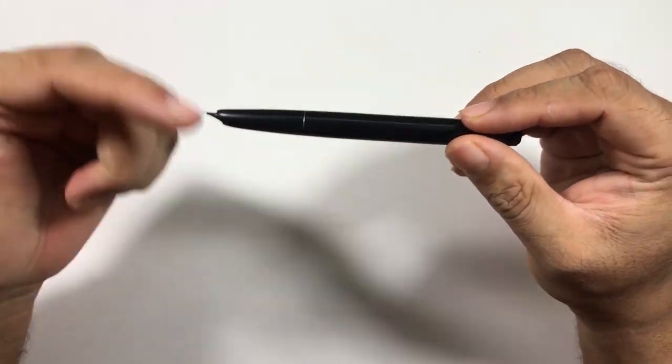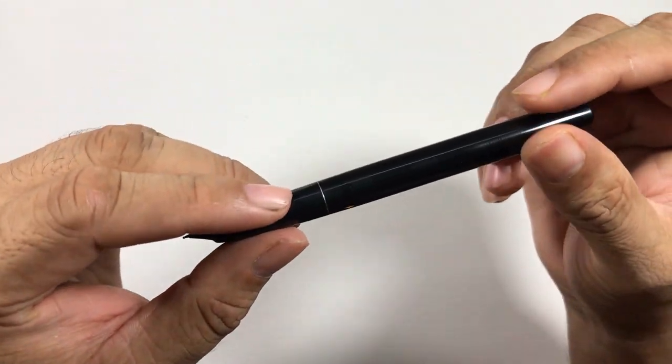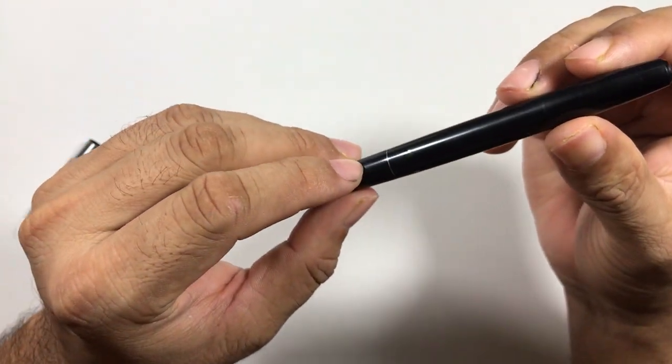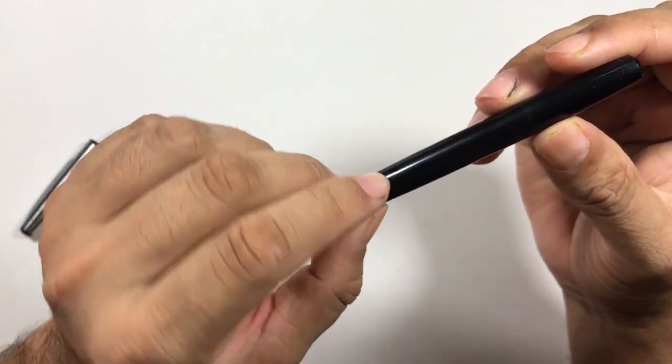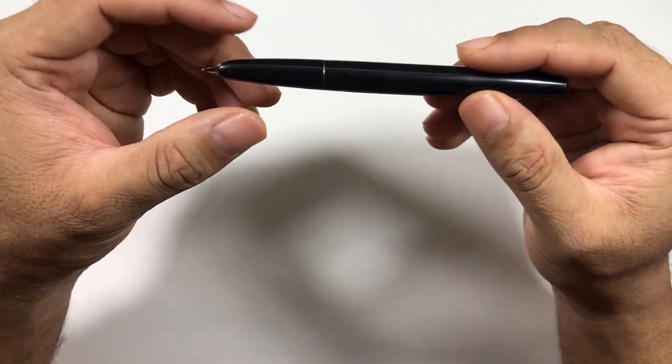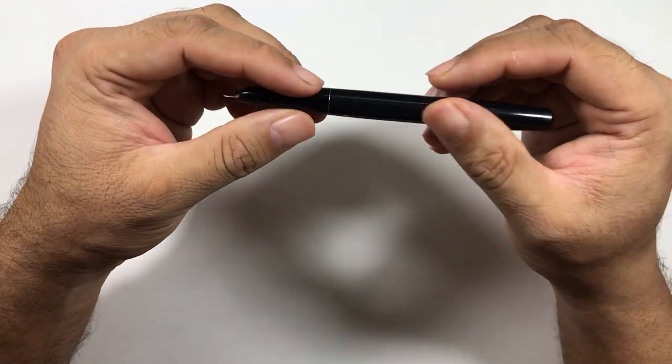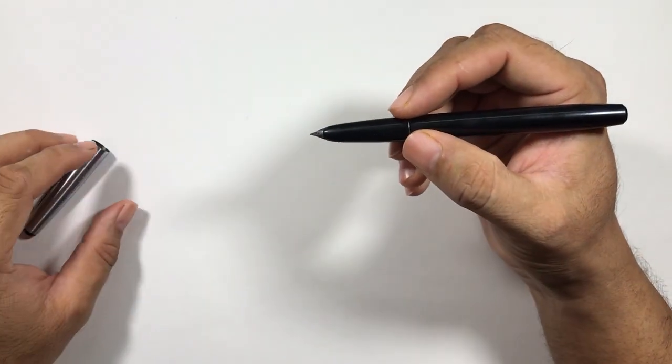It has an ink window to let you know how much ink is available and if it is full or not. The nib unit of this pen can be completely disassembled for easy cleaning.